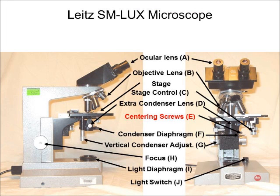Below this on the condenser are the centering screws. These are used to center the beam of light through the condenser. You will probably not have to use these since your microscopes are already adjusted.